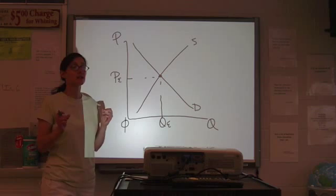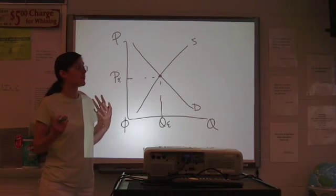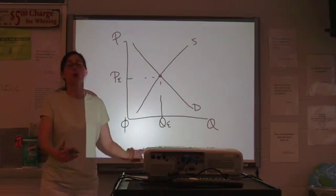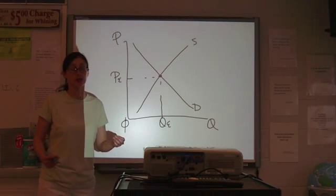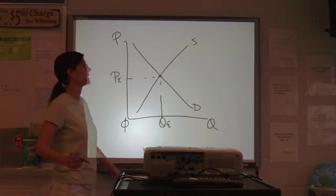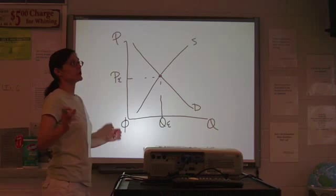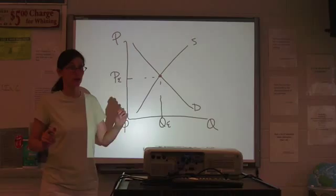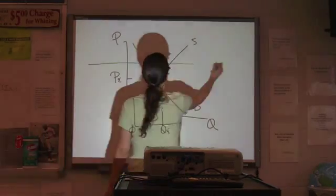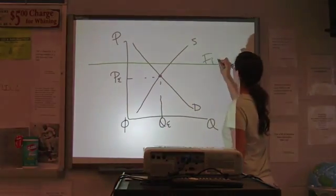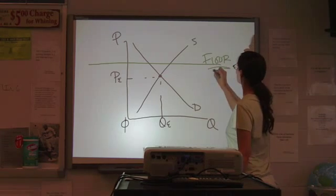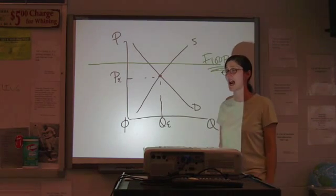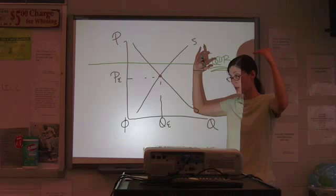So, let's say, for example, that the government puts a price floor on tart cherries. That's a market that's in trouble in the United States right now. To be effective, a price floor has to be above the equilibrium. So, let's put the floor right here. The floor is high.